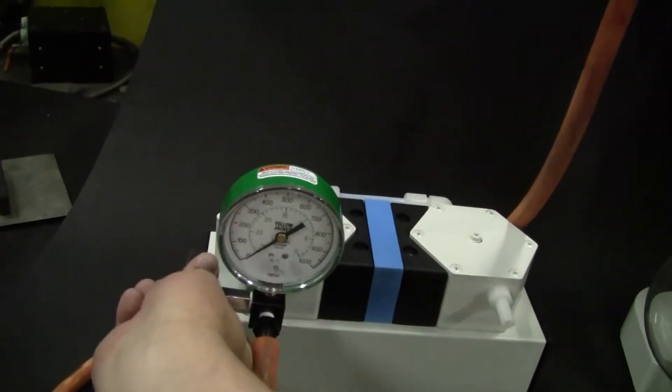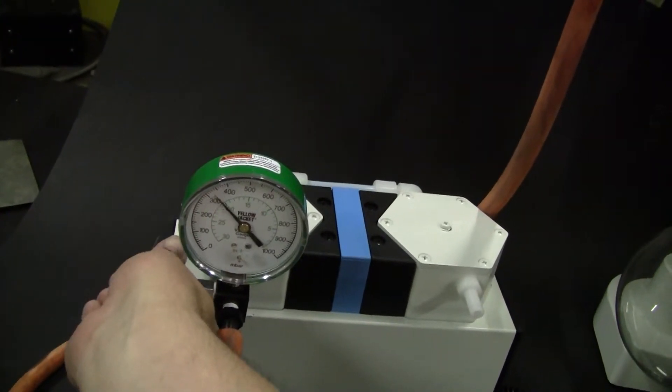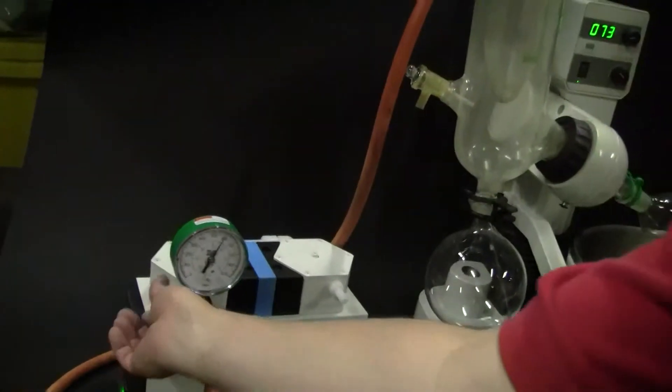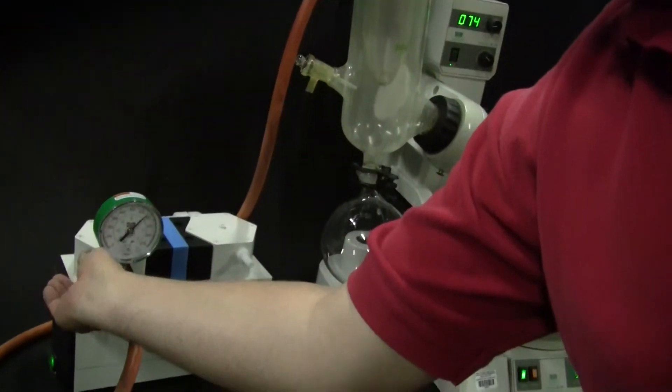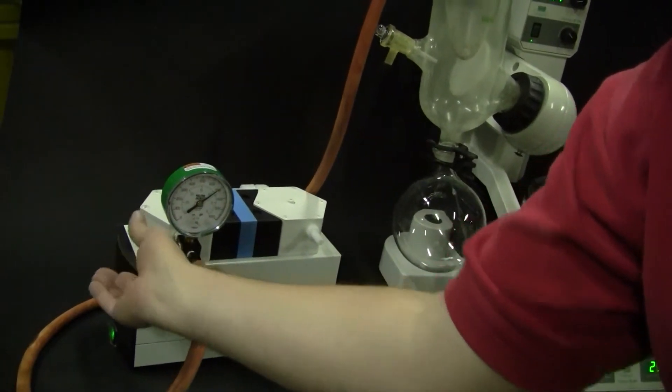So if you want to lessen the vacuum, you can actually control the vacuum a little bit when doing your evaporation. Find a nice middle point. Look at that.